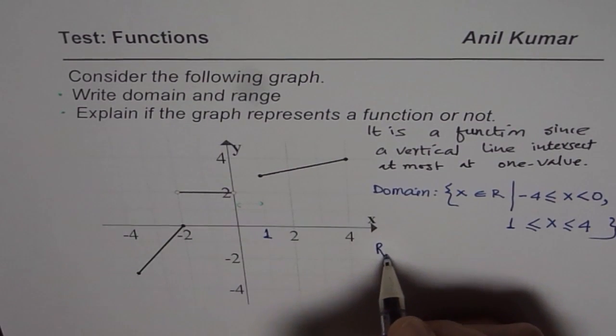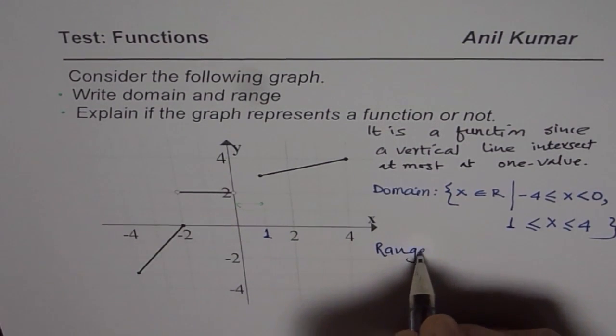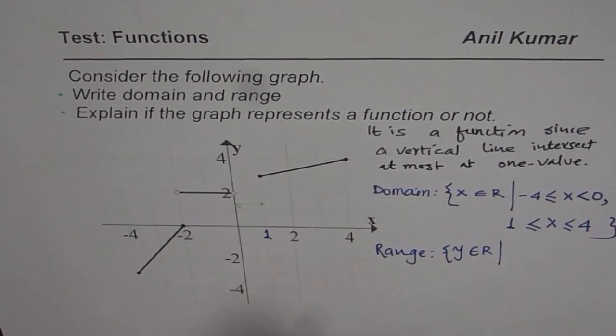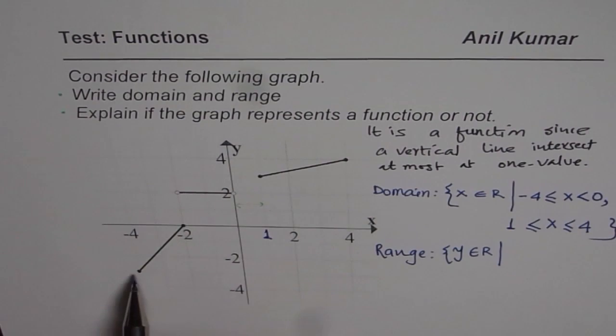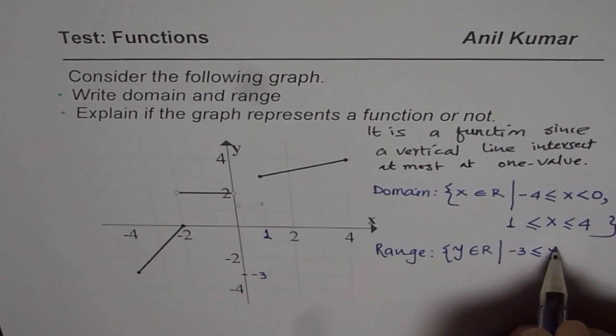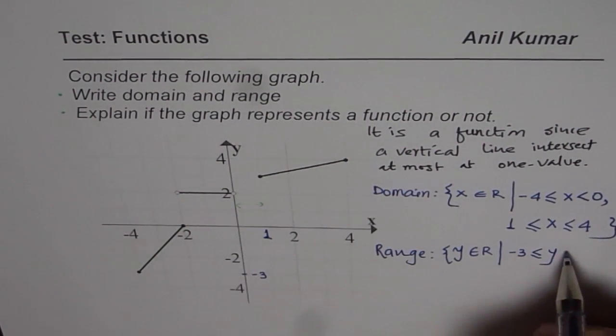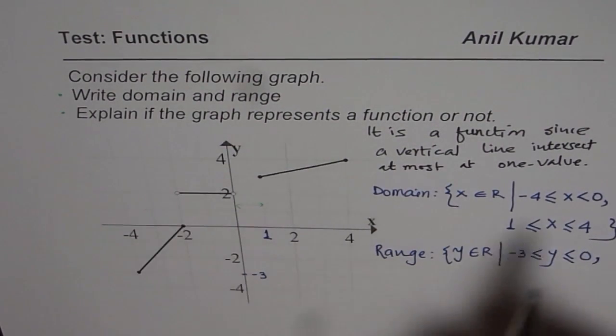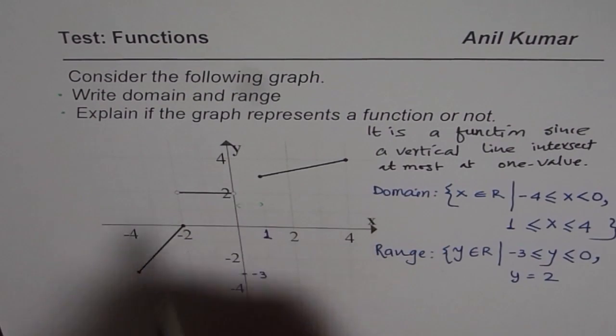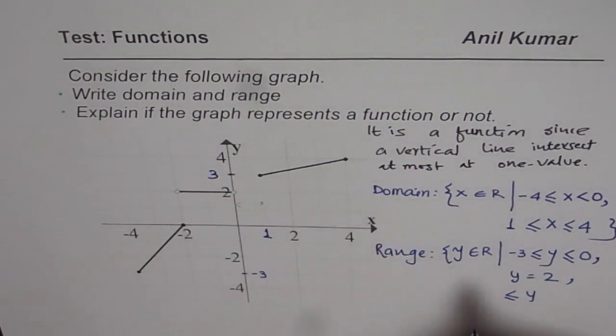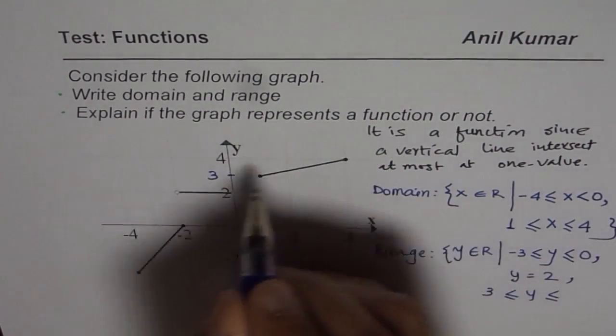Now, let us write down the range. Range for this function is y belongs to real numbers where y is from minus 3 to 0, both are included, comma. And then we have y equals to 2 at this place. And then we also have y is greater than or equal to the value 3 and less than or equal to 4.